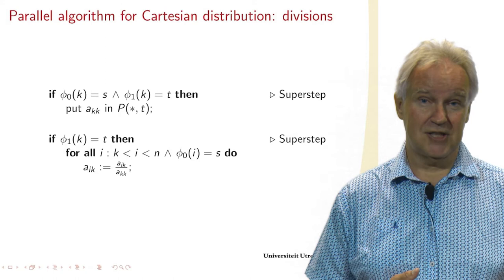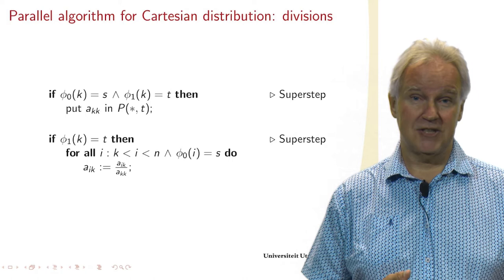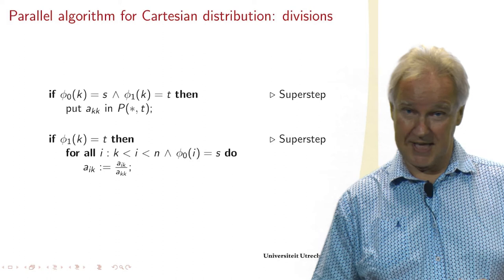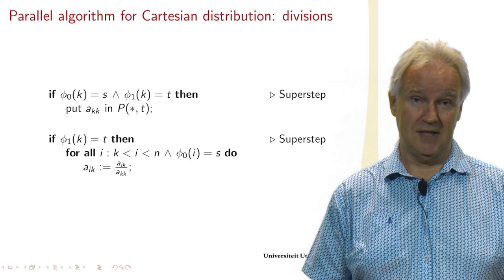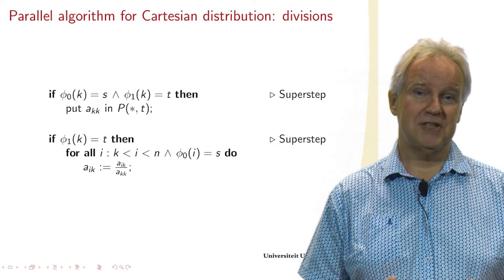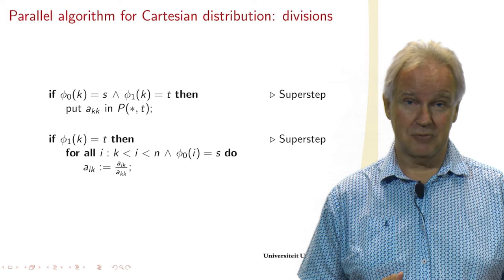And that's actually all the processors in the same processor column. So that's where you write P(*,T). And when do we do this? Only if this element AKK is mine. So phi_0(K) must equal S, and phi_1(K) must equal T. So this may need a moment to absorb, but this is how we express the algorithm for a general Cartesian distribution.